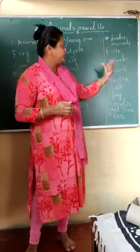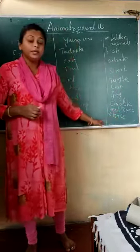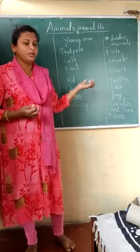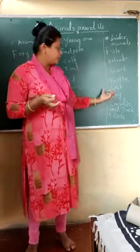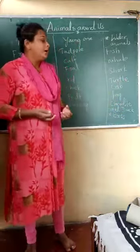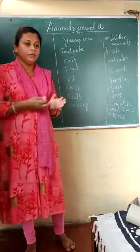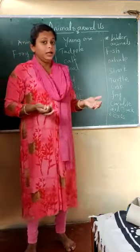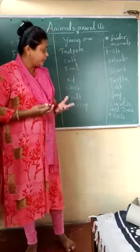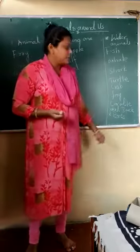Some aquatic animals like fish, crab, and sometimes frog are eaten by people — these are called seafoods. Many non-vegetarian people will eat fish, crab, and frog. Also, when we go on a picnic or vacation trip to the sea, we can see sharks and enjoy interacting with other aquatic animals.